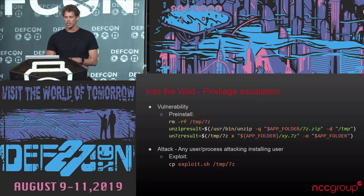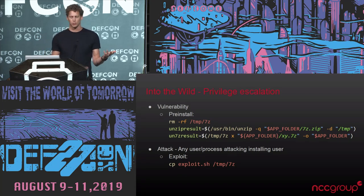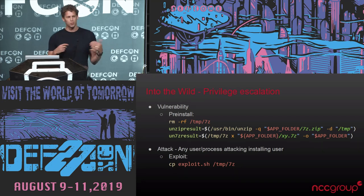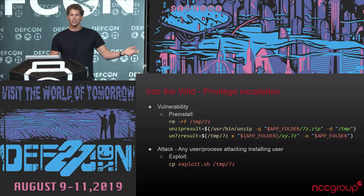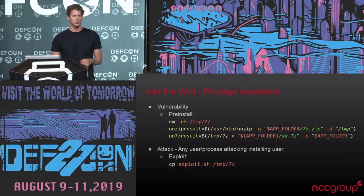Another package was privilege escalation — not current user to root, but any user to the current installing user's privileges. During the pre-installation, in case it had run before, it deletes the 7-zip binary in the temp directory, then tries to extract a 7-zip file that came with the payload and execute it. This is all happening within /tmp. Before this installer ever runs, I just put my payload as that name. None of this is sudo, so they can't delete my file. The RM fails, the overwrite from the unzip fails, but the execution happens — because like I said, these fail silently inside the scripts. So I've just gained the privileges of the current installing user.